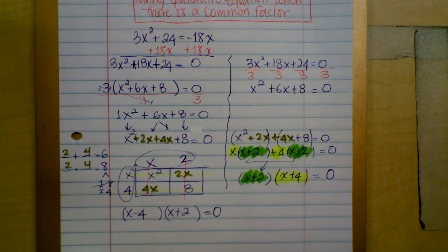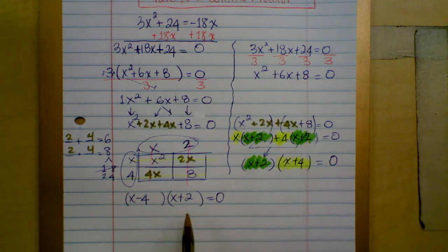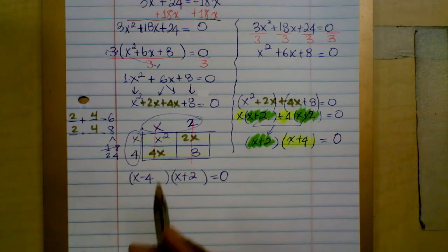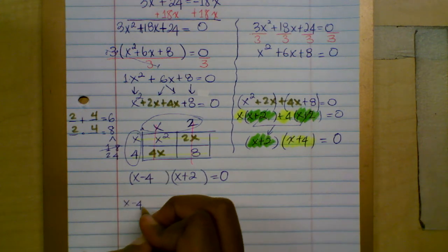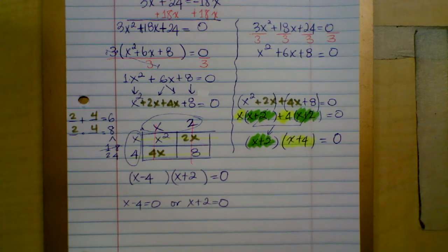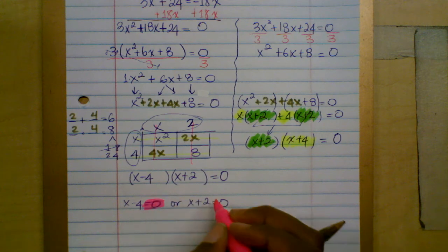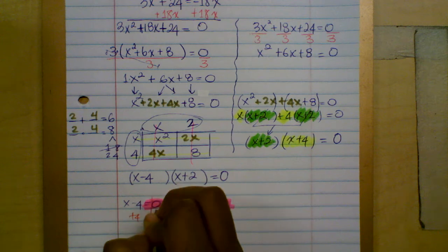The next step after factoring is to apply the zero product property. If two factors equal zero, then either one of those factors equals zero: either x plus 4 equals zero, or x plus 2 equals zero. Set each factor equal to zero and solve for x. For x plus 4 equals zero, add — wait, subtract 4 on both sides.